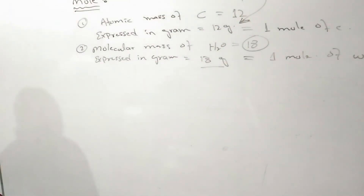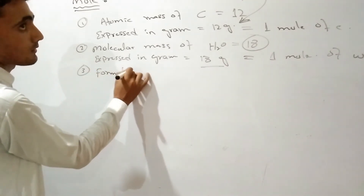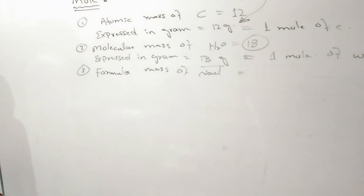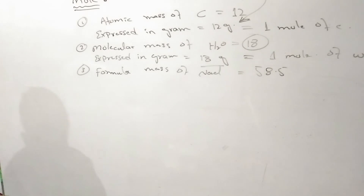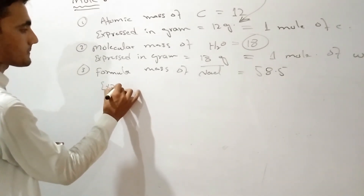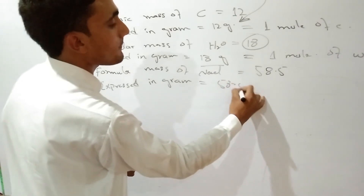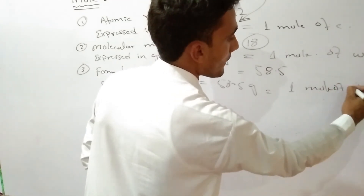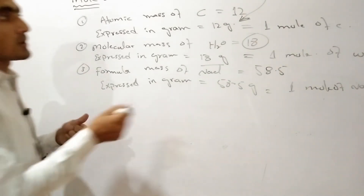Next, the formula mass of NaCl. The formula mass of NaCl is 58.5. So expressed in grams, 58.5 grams of NaCl is equal to 1 mole of NaCl.